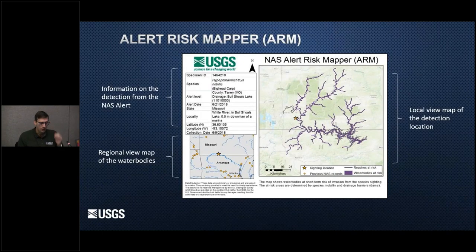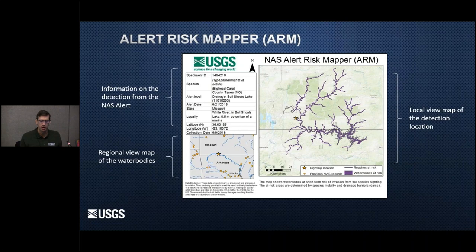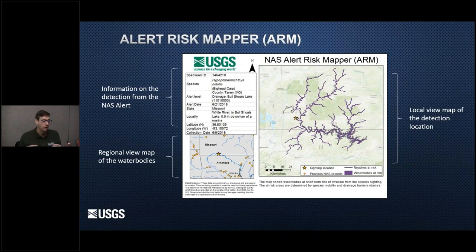The Alert Risk Mapper was created in 2018. The goal of this project was to provide a short-term risk assessment — looking over the next six months or so — about the potential for species spread from a new observation or new introduction. This takes into account species movement potential within the drainage using species life history: is it a passive or active disperser, does it require specific flow rates, is it a big river species or a headwater species, and what are the flow rates within that area? It also considers the presence of barriers such as dams or waterfalls.